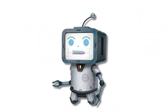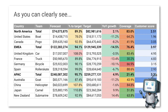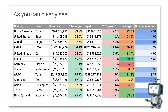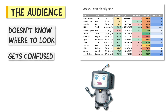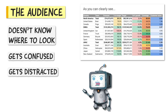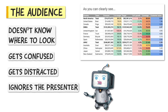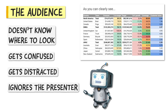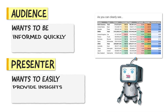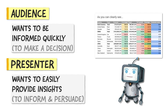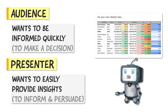How many times have you been in a meeting and seen slides like these? Whether they are numbers, words, or charts, there is too much data on the screen. The audience doesn't know where to look — they get confused or distracted and start ignoring the presenter as they try and figure out what they are looking at on the screen. It's safe to say neither the audience nor the presenter are getting what they want from this slide.